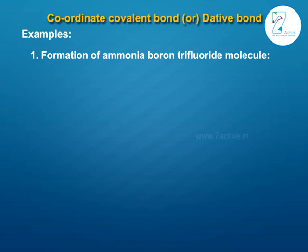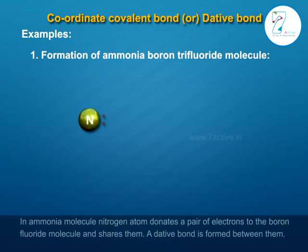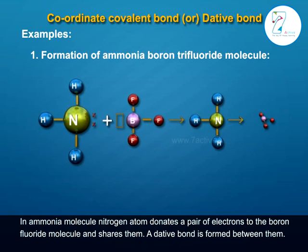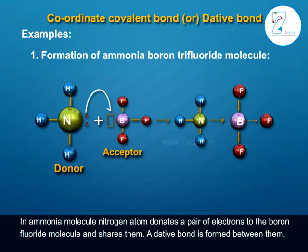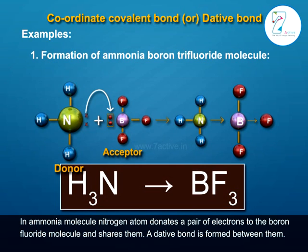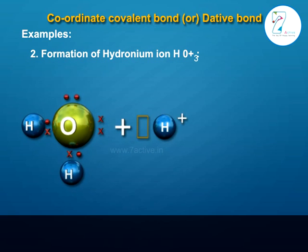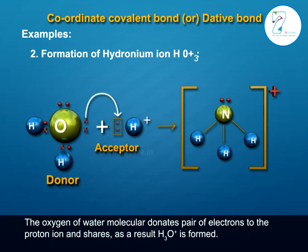Example one: formation of the ammonia-boron trifluoride molecule. In the ammonia molecule, the nitrogen atom donates a pair of electrons to the boron trifluoride molecule and shares them, forming a dative bond: H3N → BF3. Example two: formation of hydronium ion H3O+. The oxygen of the water molecule donates a pair of electrons to the proton H+ and shares them, forming H3O+.